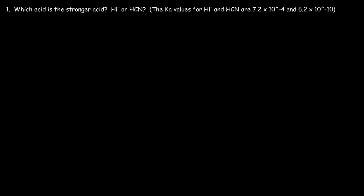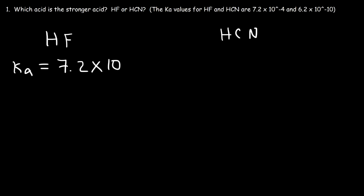In this video, we're going to go over some questions pertaining to acid strength and base strength. Which acid is the stronger acid — HF, hydrofluoric acid, or HCN, hydrocyanic acid? We're given the Ka values for both. For hydrofluoric acid, the Ka value, the acid dissociation constant, is 7.2 times 10 to the minus 4. And for HCN, it's 6.2 times 10 to the minus 10.